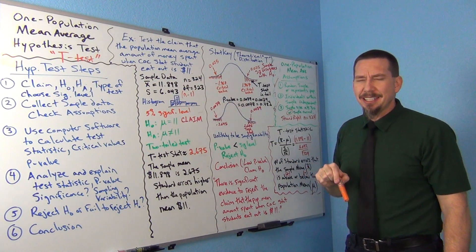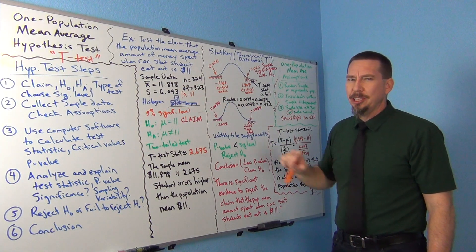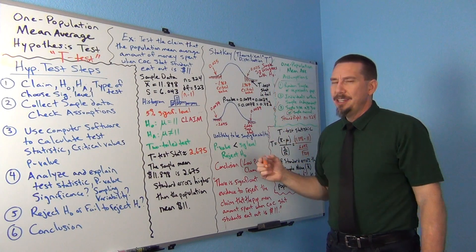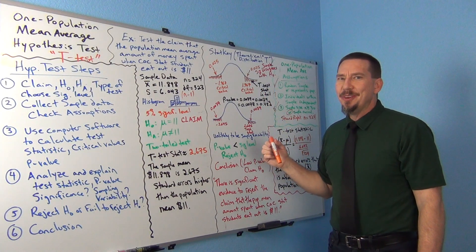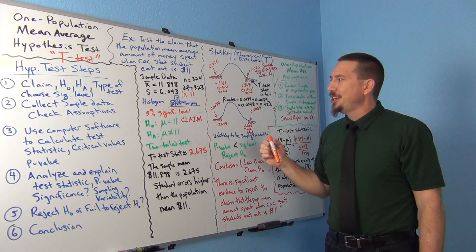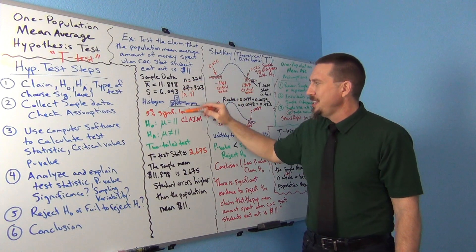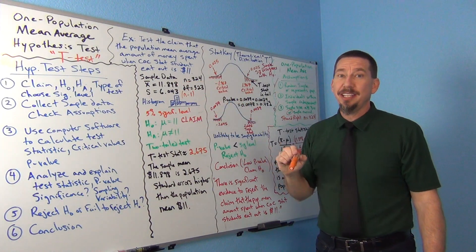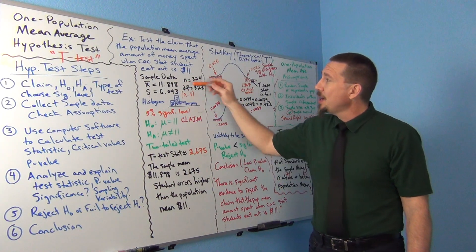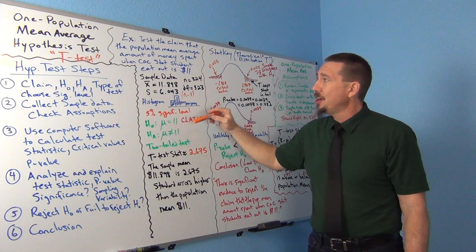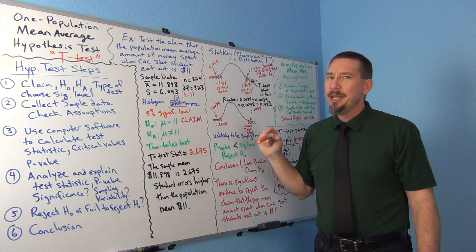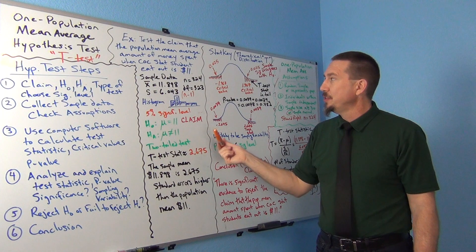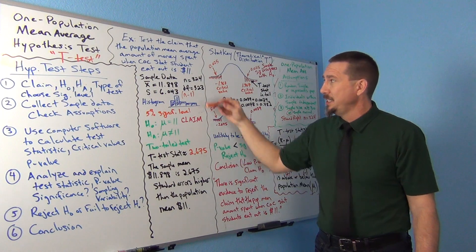I always get stats students who think they can look at it and say, I know those are close. You don't really know — you don't want to go with your gut on that. I don't know how close these are; that's why I need to calculate the test statistic. I know how far apart they are in terms of dollars, but I don't know how many standard errors apart they are or if they're significantly different.